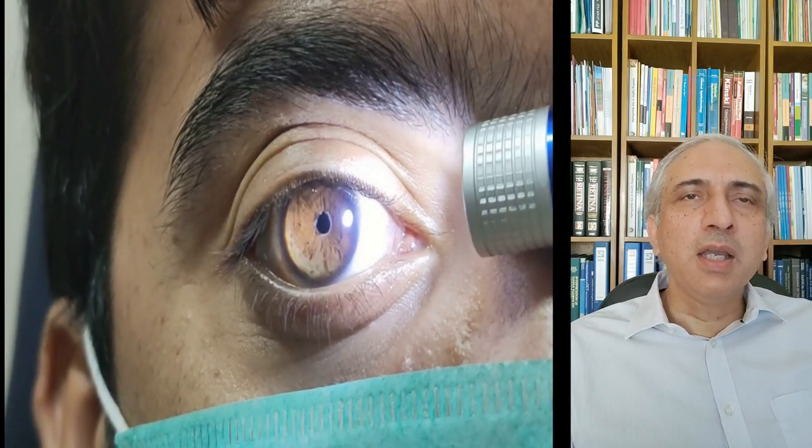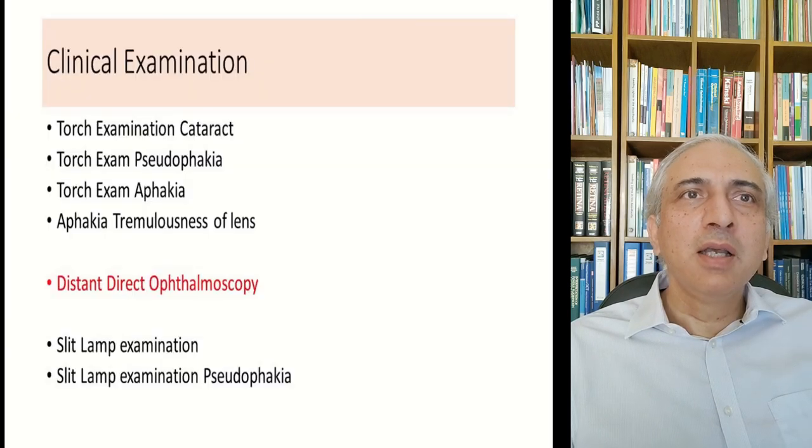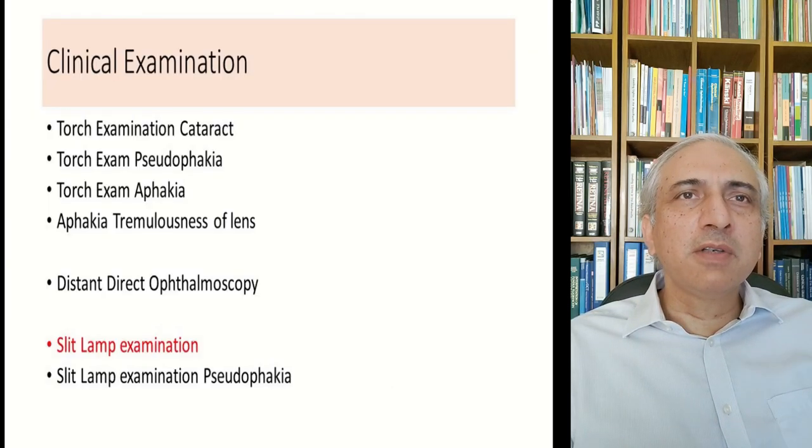On distant direct ophthalmoscopy, hold the ophthalmoscope and look for the red reflex — any lens opacities or opacification will appear as black shadows against the red reflex.